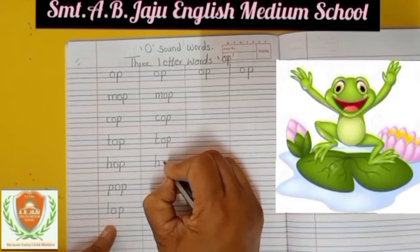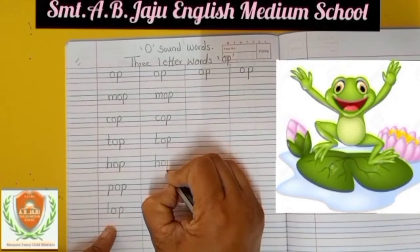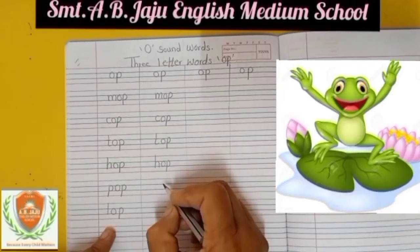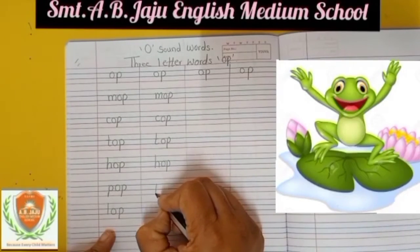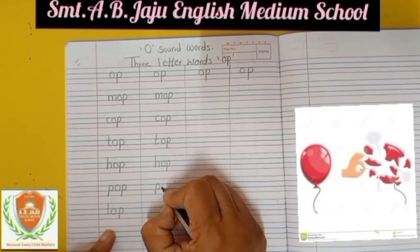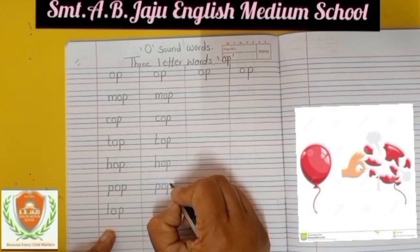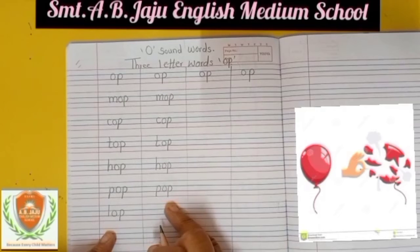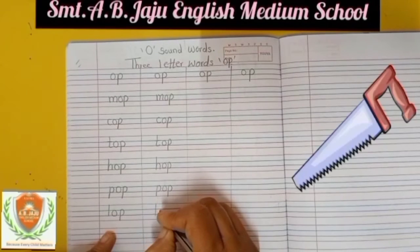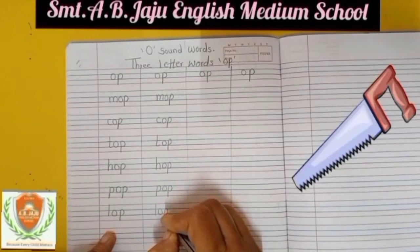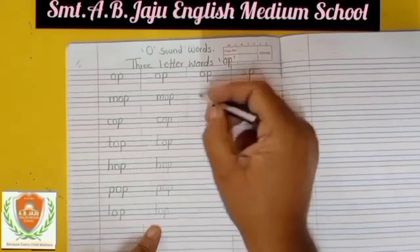Small H, small O, small P — H-O-P, hop. Small P, small O, small P — P-O-P, pop. Small L, small O, small P — L-O-P, lop.